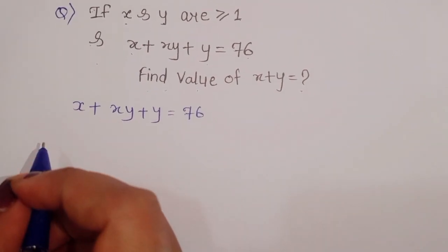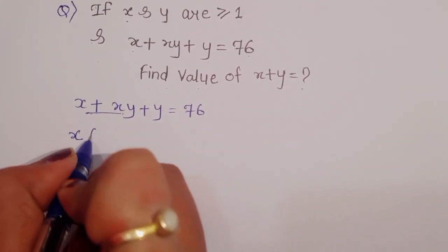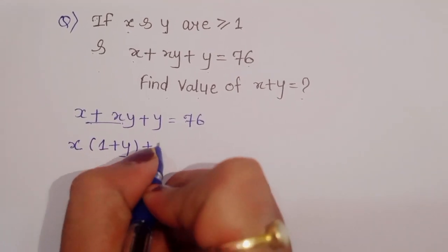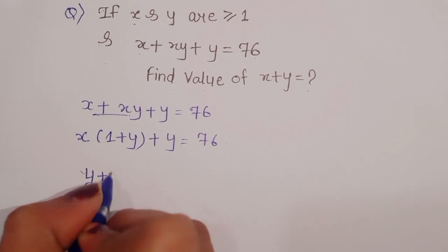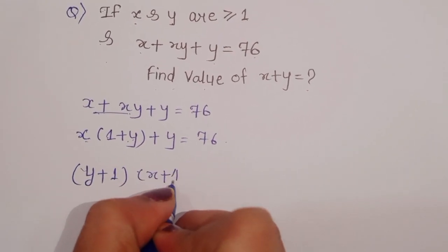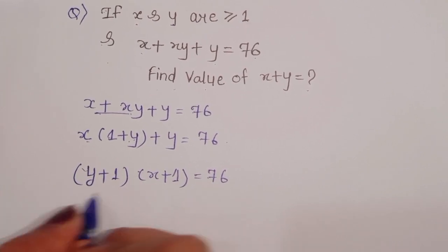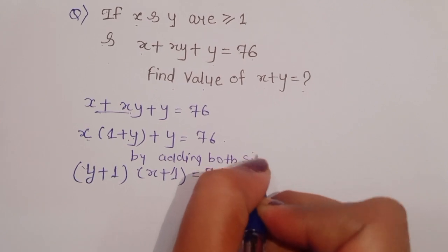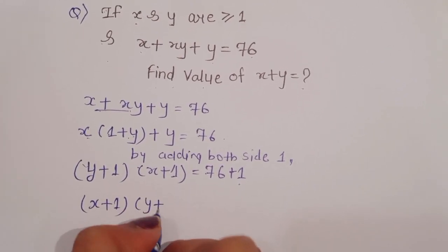What is given here is x plus xy plus y equals 76. We can take x as common, so it becomes x times (1 plus y) plus y equals 76. We can then write this as (y plus 1) plus x(y plus 1) equals 76, which gives us (x plus 1) into (y plus 1) equals 76 plus 1.